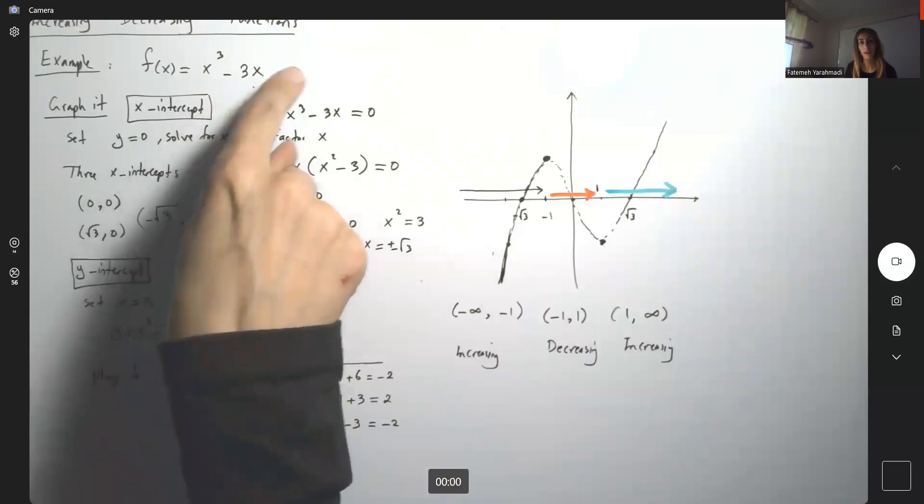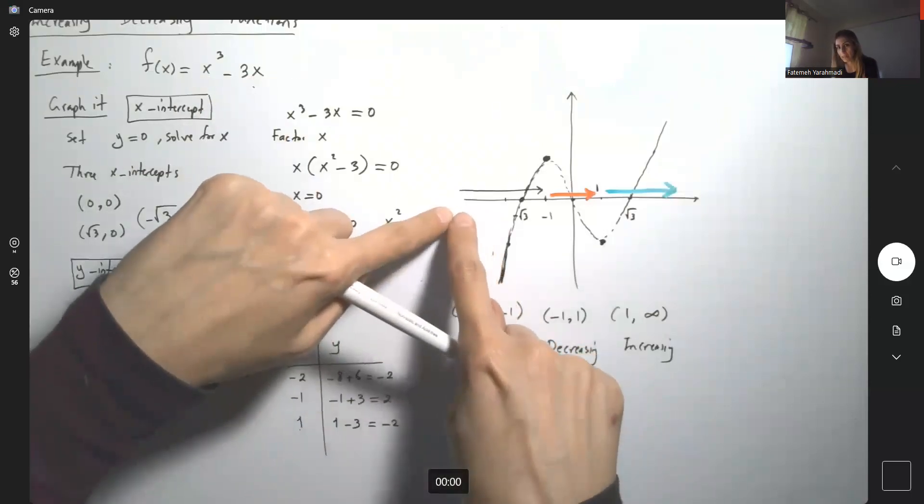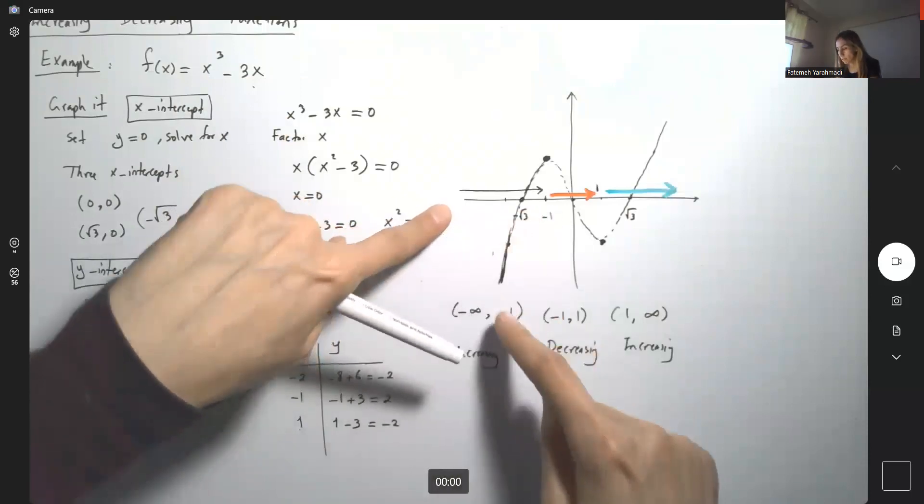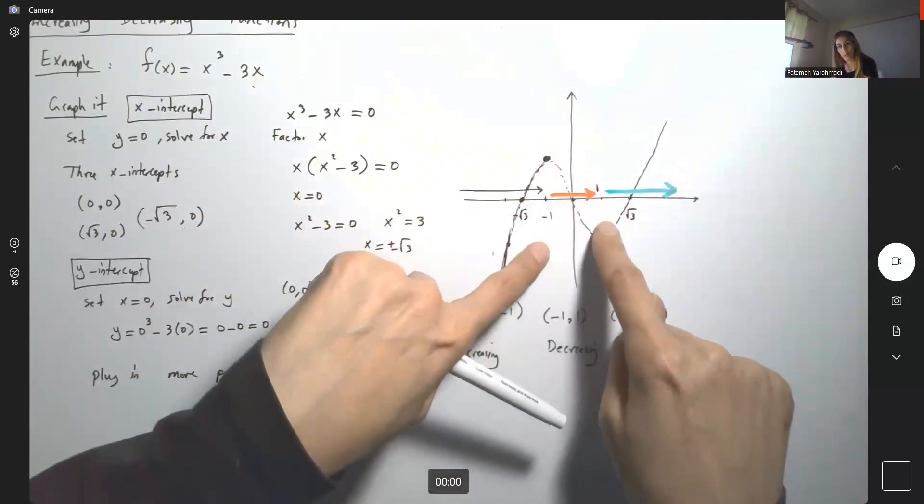This is the behavior of the function x³ - 3x. On the x-axis, from negative infinity to -1, the function is increasing - the y values are getting larger and larger. From -1 to 1,